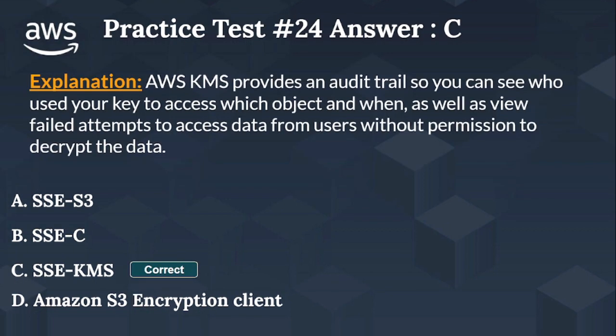The right answer is Option C, SSE-KMS. AWS KMS provides an audit trail so you can see who used your key to access which object and when, as well as view failed attempts to access data from users without permission to decrypt the data. Let's move on to the next question.